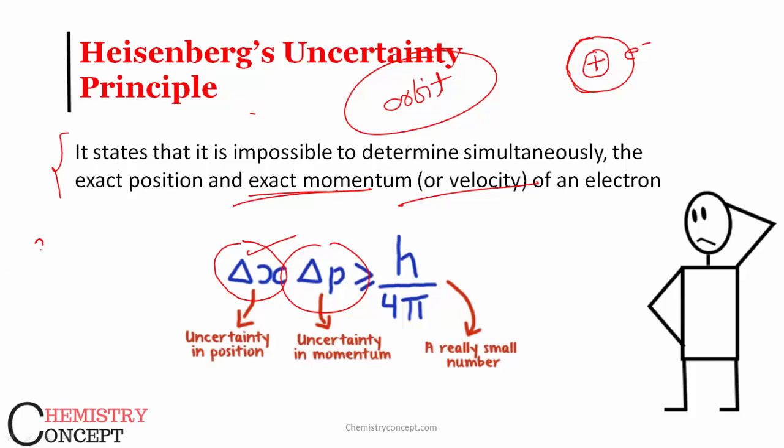So, I cannot find out the position exactly, there would be some 5 or 10% margin of error. Similarly, I cannot find out the momentum also exactly, there would be some margin of error. This is uncertainty in position, delta p is uncertainty in momentum, and this will always be greater than h upon 4 pi.